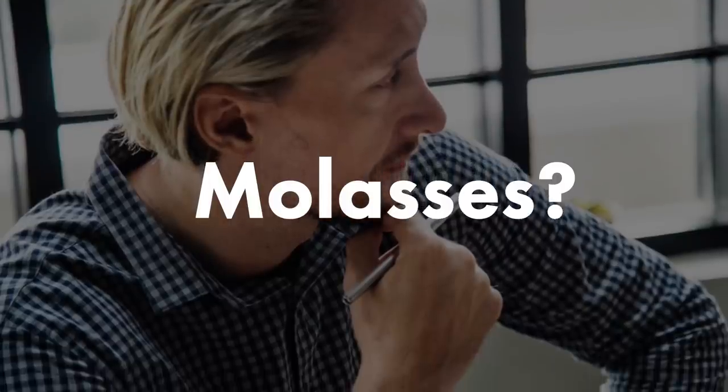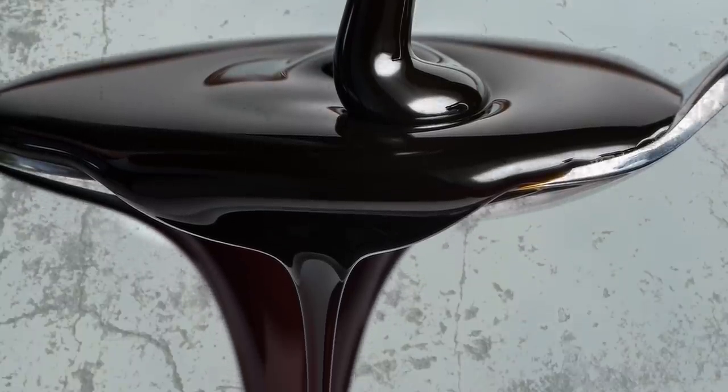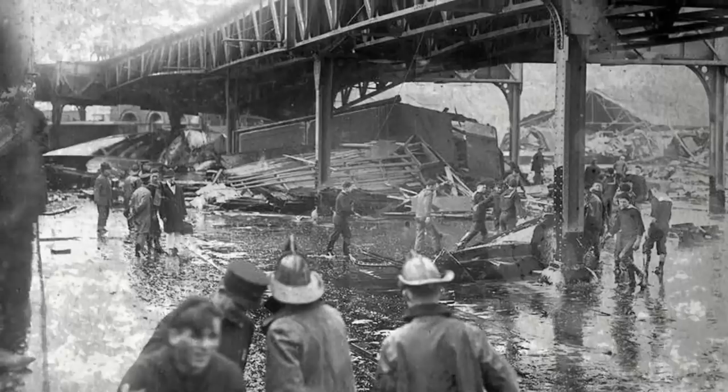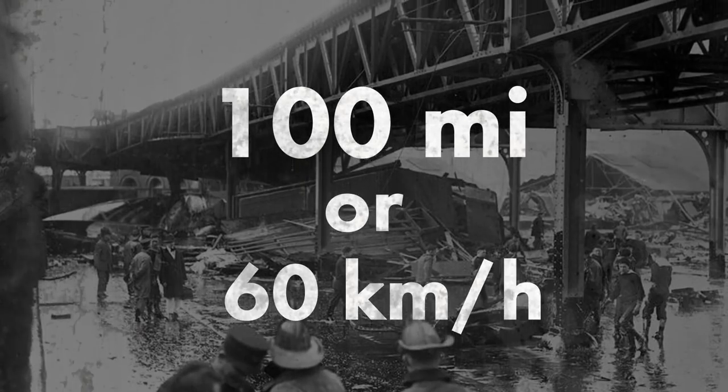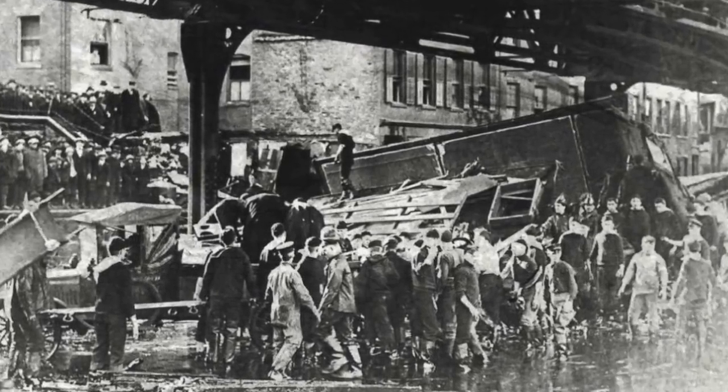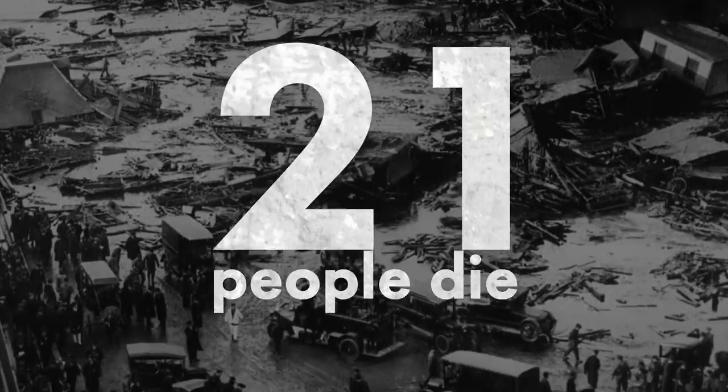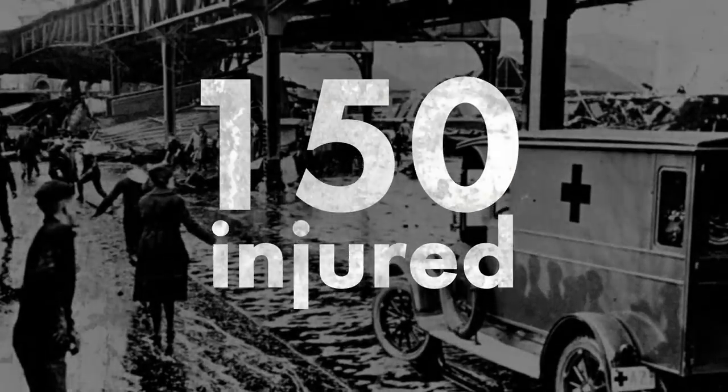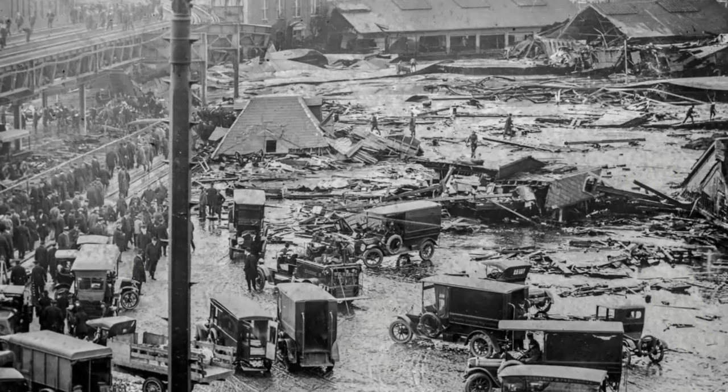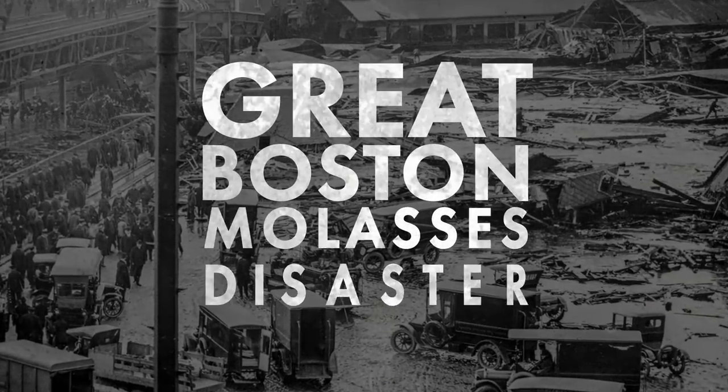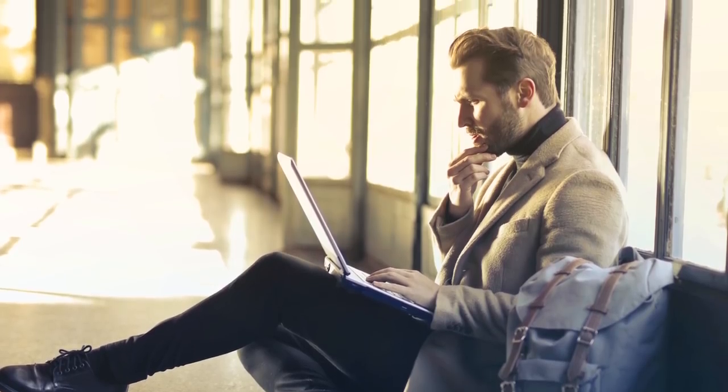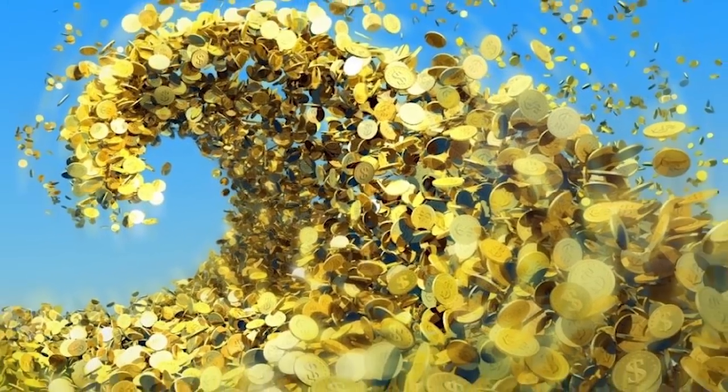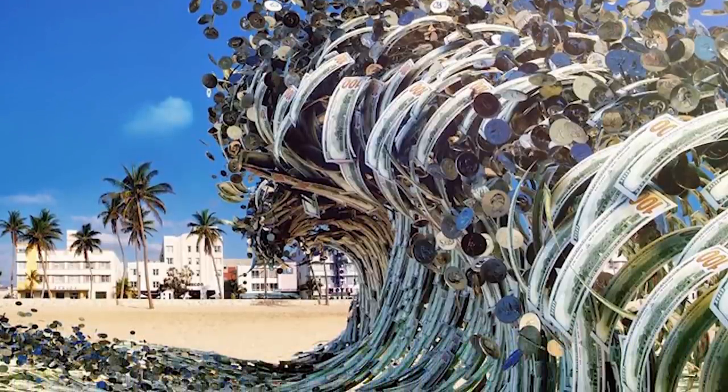But this syrupy liquid turned into a tsunami, moving at a speed of 100 miles or 60 kilometers per hour. It swept through the city, killing 21 people and sending 150 more to the hospital. This is now known as the Great Boston Molasses Disaster. And that was just molasses. Now imagine the consequences if a mountainous wave of coins moved with such stunning momentum.